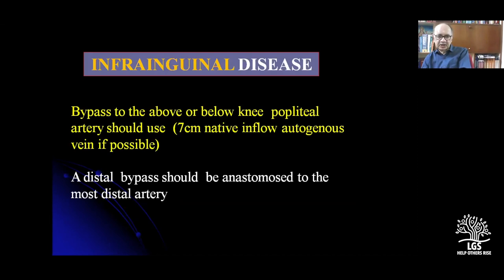Distal bypass anastomosis is done to the most distal point that is accessible. At a crural level, it will not function for a longer time, but at least it will heal the ulcer that is present. Seven centimeters of native inflow with autogenous vein is possible. Always a vein is preferable — autologous vein is preferable over prosthetic graft. That is the working rule.